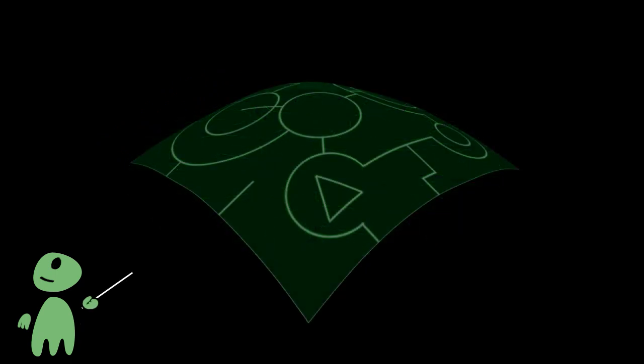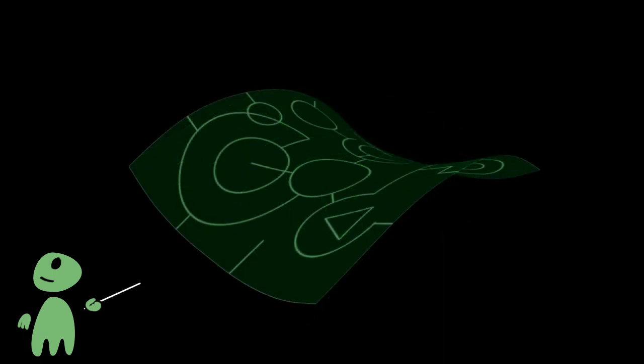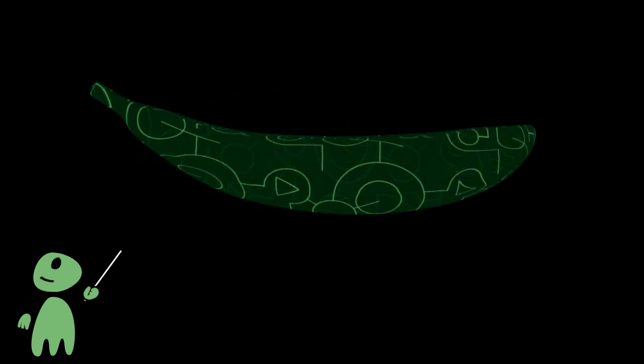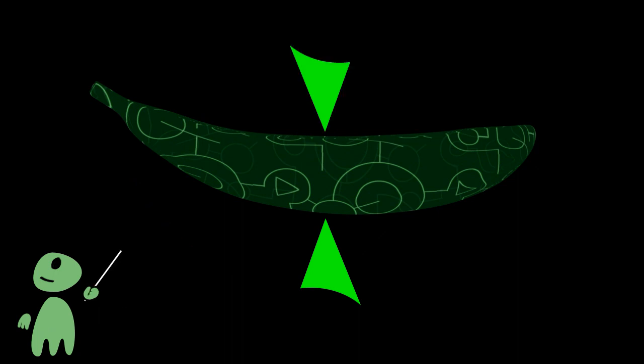A sphere is said to have positive curvature, aka spherical curvature. A saddle surface has negative curvature, aka hyperbolic curvature. A surface can be differently curved at different locations. A banana for example is positively curved on one side and negatively on the other side.